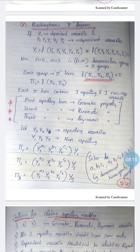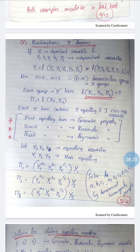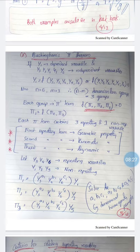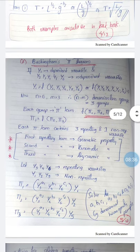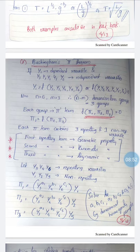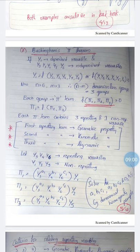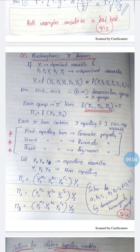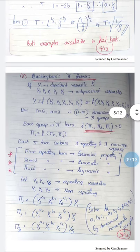Buckingham's Pi theorem addresses this limitation. If y₁ is a dependent variable and y₂, y₃, y₄, y₅, y₆ are independent variables, then f(y₁, y₂, y₃, y₄, y₅, y₆) = 0. All variables are considered together. The total number of variables n = 6 and the number of fundamental units m = 3. The variables can be grouped into n − m = 6 − 3 = 3 dimensionless groups, each called a pi term, so the equation becomes f(π₁, π₂, π₃) = 0.